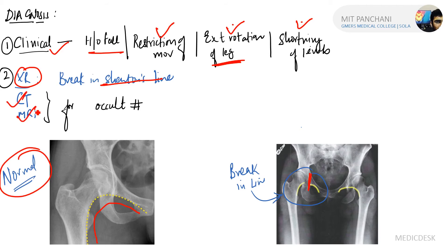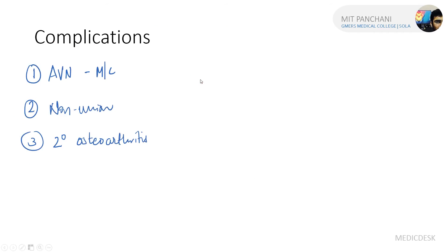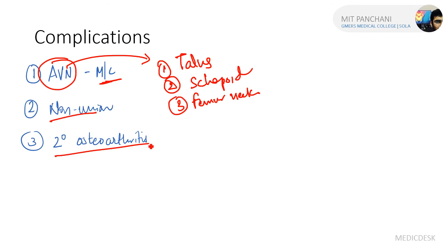We can also do CT and MRI for occult fractures not seen on X-ray. Talking about complications: avascular necrosis (AVN) is the most common, associated with fracture of the femur neck. Other sites where AVN can be seen include talus, scaphoid, and femur head. Other complications include non-union and secondary osteoarthritis.